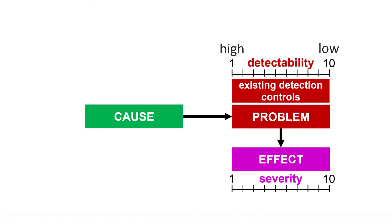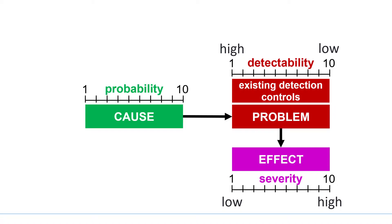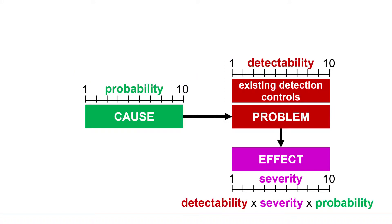Then the severity of the effect is evaluated on the same scale, where 1 means low severity and 10 means high severity of the effects on the business or the customer. The probability of occurrence of the cause is also evaluated on a 10-level ordinal scale, where 1 means low probability and 10 means high probability of the cause which leads to its respective problem. The estimated values for the detectability of the problem, the severity of the effect, and the probability of occurrence of the cause are multiplied by each other. The result is the risk priority number, which can vary between 1 and 1000.